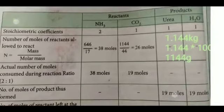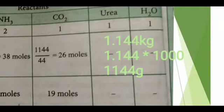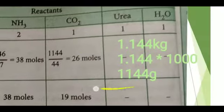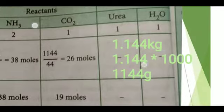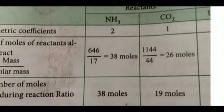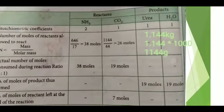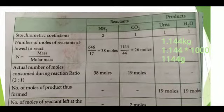For carbon dioxide, the given quantity is 1.144 kg. Converting to grams: 1.144 × 1000 = 1144 grams. The molar mass of CO₂ is 44 g/mol. Therefore, n = 1144 / 44 = 26 moles of CO₂. So the moles of reactants allowed to react are: ammonia = 38 moles, carbon dioxide = 26 moles.